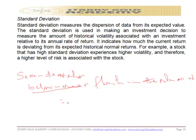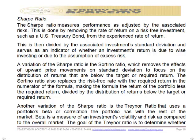The next risk measurement is the Sharpe ratio. The Sharpe ratio measures performance as adjusted by the associated risk. This is done by removing the rate of return on the risk-free rate, such as a treasury bond, from the expected rate of return — calculated as expected return minus risk-free rate, all divided by standard deviation. This serves as an indicator of whether investment return is due to wise investing or due to assumption of excess risk.